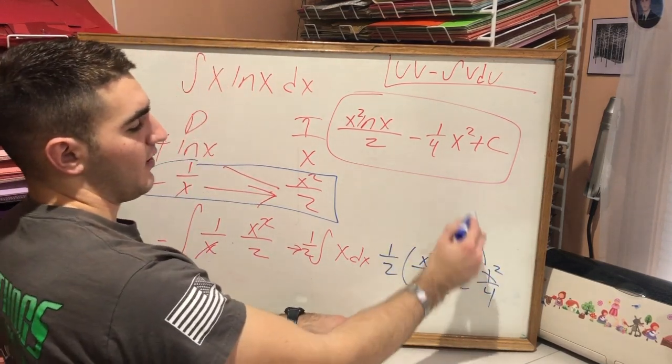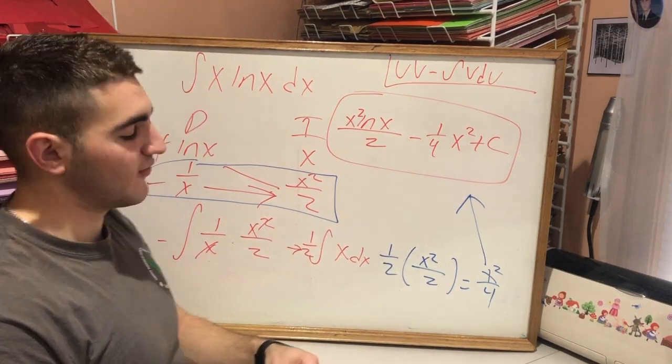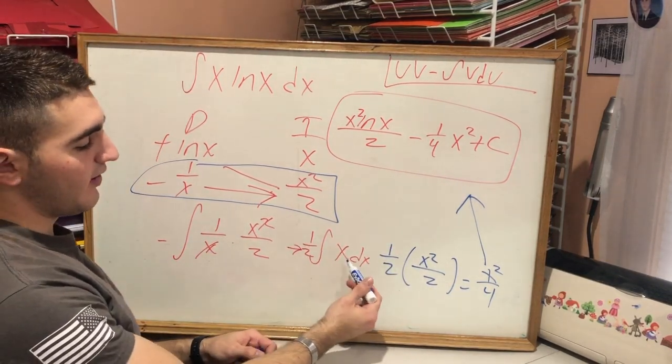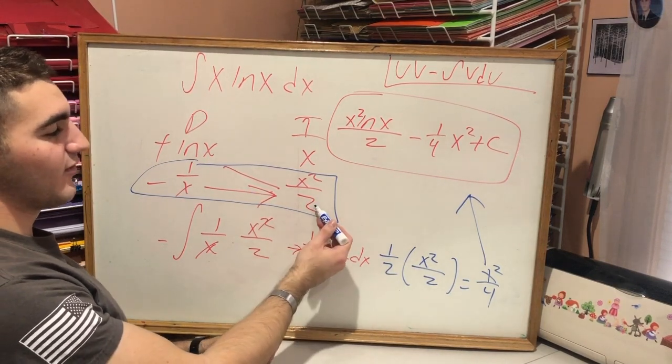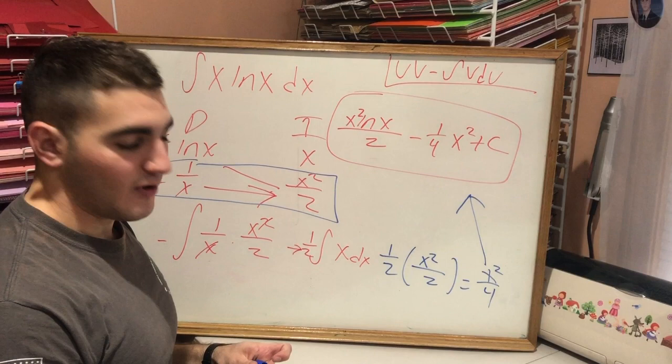And that's why I wrote it over there, that you're probably wondering where you got the 4 from. It's because if you integrate x, you get 1 half, right? And then you already had the 1 half from the previous integral, so that's why.